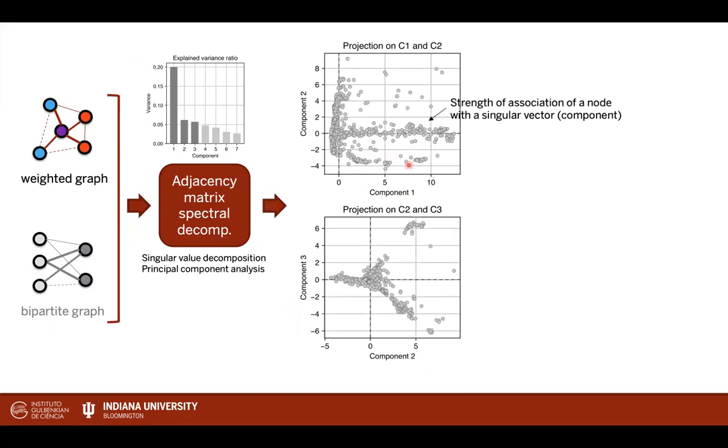The position of these nodes in these plots represent the strength of association of a node with a particular singular vector or with a particular component, and what we're interested in is not to take into account points that are at the origin, because those are not associated with either component, but we're actually interested in these protrusions of the nodes that lie outside of the origin of the plot. So we need a systematized way to identify where's the origin, what's not the origin, which is not really clear from these two plots.